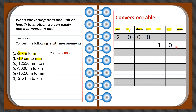Because we are converting from a larger unit to a smaller unit, we fill in with zeros until we reach the asked unit. The asked unit is millimeter, so we fill in zeros until we get to the millimeter column. Therefore, ten centimeters equals 100 millimeters.